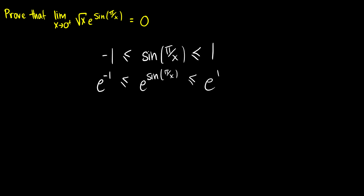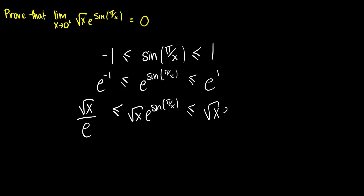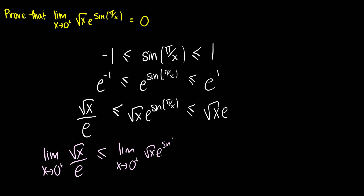Now let's multiply everything by the square root of x. We have the square root of x over e — remember that e to the negative one is the same as one over e — and this will be less than or equal to the square root of x times e to the sine of pi over x, which is less than or equal to the limit as x approaches zero from the right of the square root of x times e.